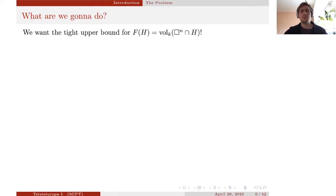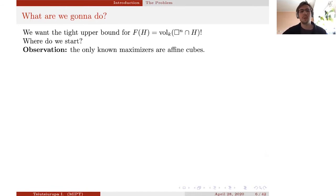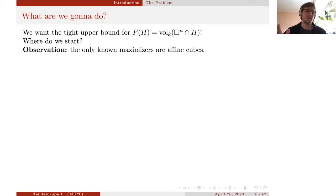Our aim is to find the tight upper bound for the volume of the section for any case — not only when k divides n — but for each k and each n. We start with the observation that all the known maximizers of the volume of the section are affine cubes. Ball doesn't say anything about this in his article, but nevertheless the only known maximizers are affine cubes.